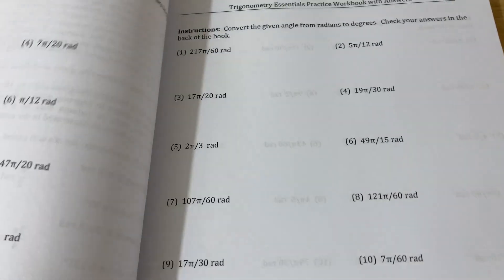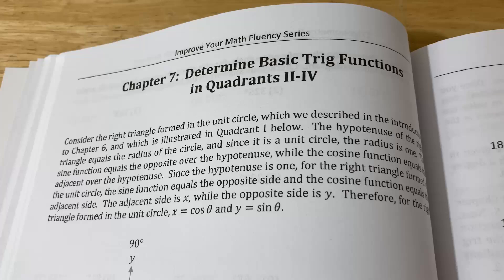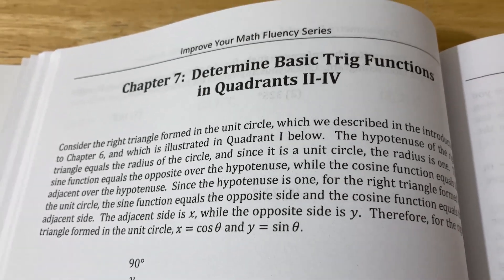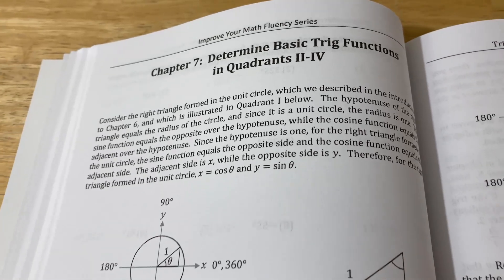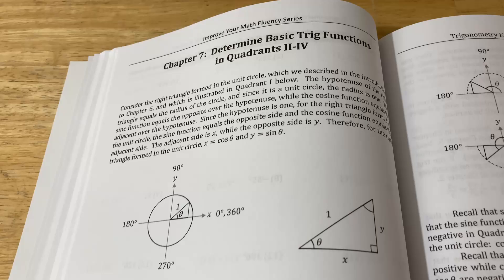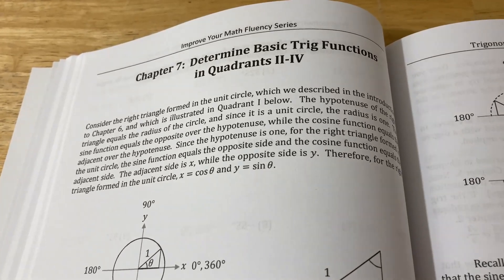Let's look at the layout of this book. Perhaps one of the most important chapters in this book is chapter seven, determine basic trig functions in quadrants two through four. And this is really what makes trig hard for a lot of people, because if you don't know how to do this, that means a couple things.